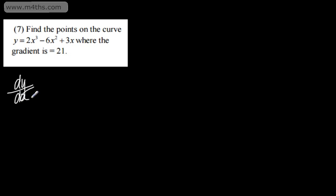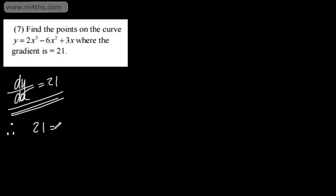Question 7 says find the points on the curve y is equal to 2x cubed minus 6x squared plus 3x where the gradient is 21. So this time we're finding where a gradient is 21 rather than evaluating the gradient. What we want is the gradient function, so dy by dx will be equal to 21. So therefore 21 is equal to — differentiating — 6x squared minus 12x plus 3.